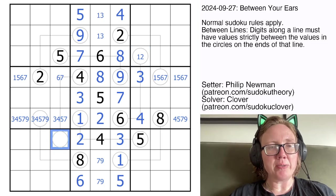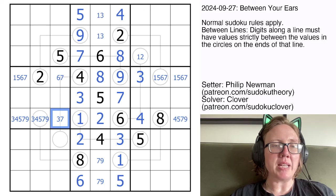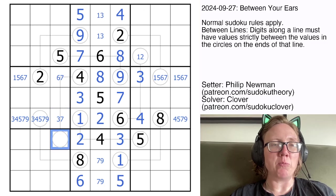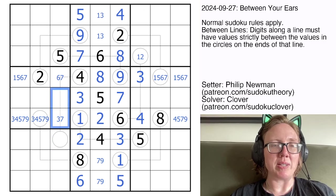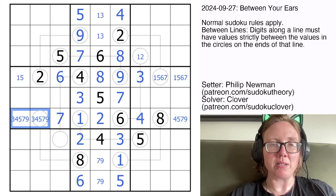Now here, this can't be a 4. It also can't be a 5 by Sudoku, and if it was a 3, then this end of the between line would have to be 1, leaving us with only 2 and 3 to place on this part of the line, which is impossible. So that will be a 7, making that a 6, and we can clean up a bit with Sudoku.